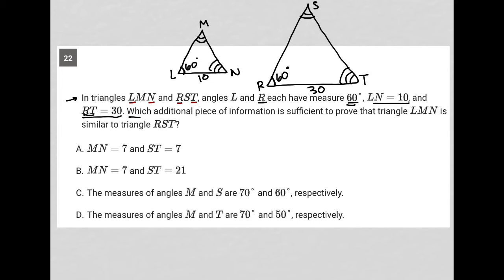Which additional piece of information is sufficient to prove that triangle LMN is similar to triangle RST? Okay, well, let's see. Choice A says MN equals 7 and ST equals 7. Well, if this were 7 and this were 7, that would disprove that these two triangles are similar. Because if these triangles were similar, the side lengths, the corresponding sides should be proportional.